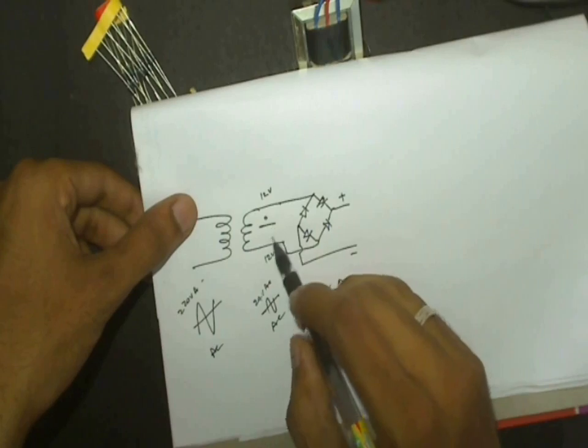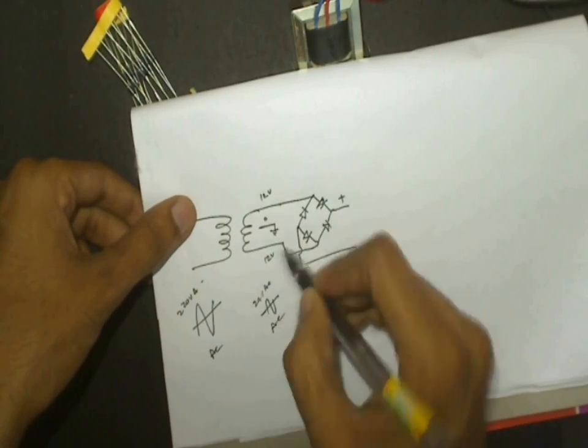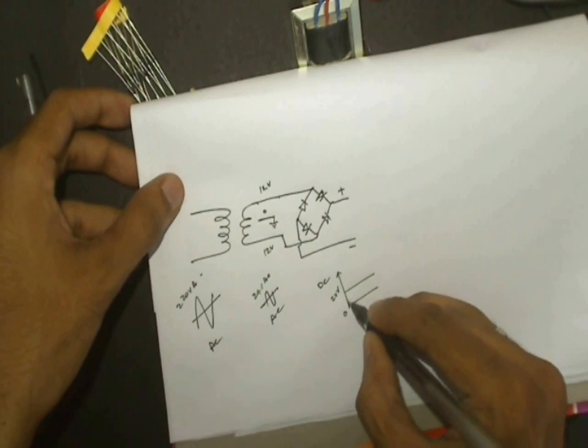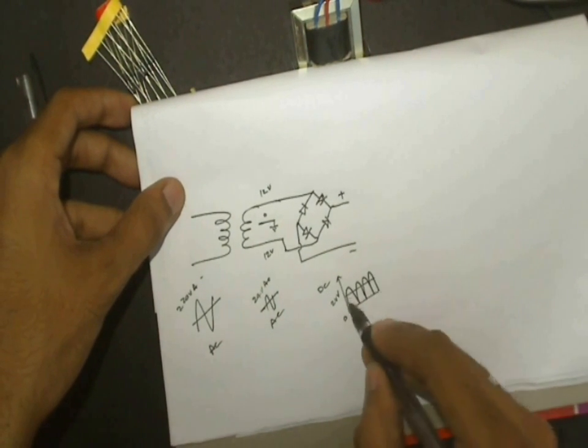The center wire in the transformer output can be either connected to the ground or left open. The output of the bridge rectifier is not a pure DC. It is called pulsated DC.